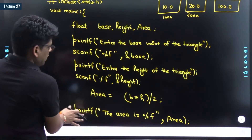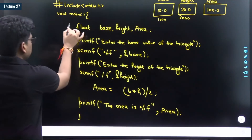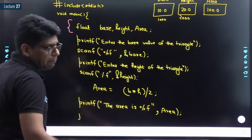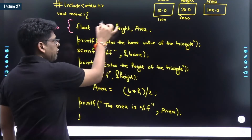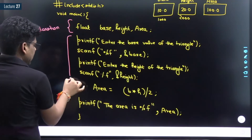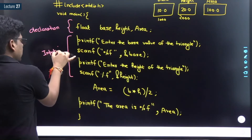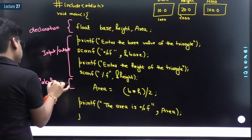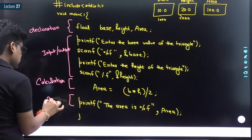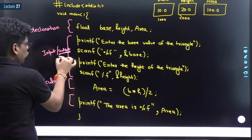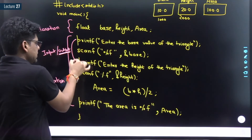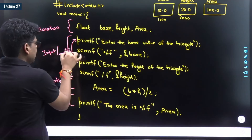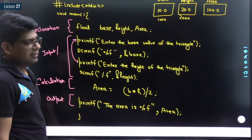That is the complete code for calculating the area of a triangle given base and height. To summarize: the declaration stores values coming from the keyboard and for temporary calculation. The input/output section fetches input by displaying messages using printf and reading with scanf. The calculation is done by the program, and the final output displays the result.